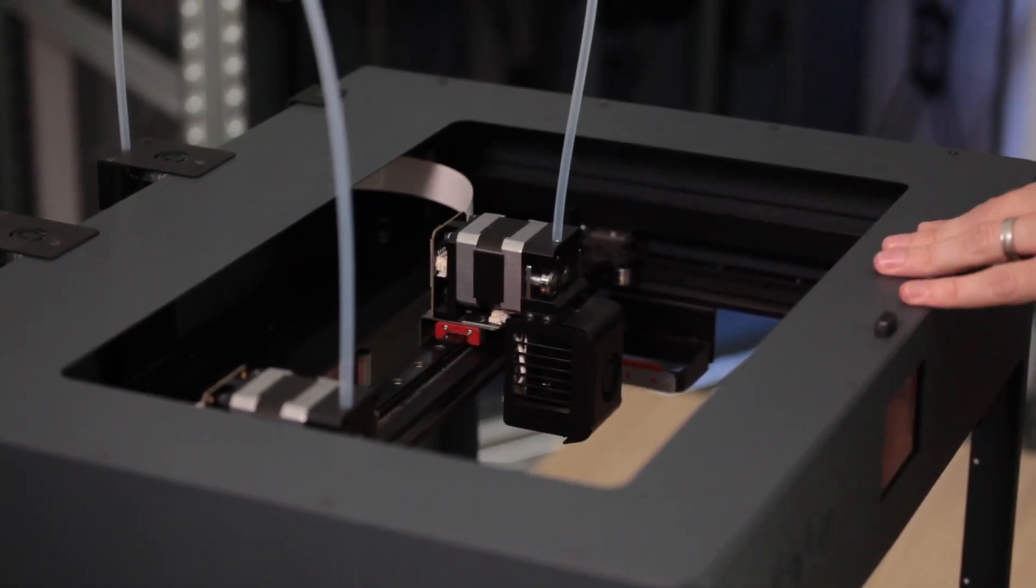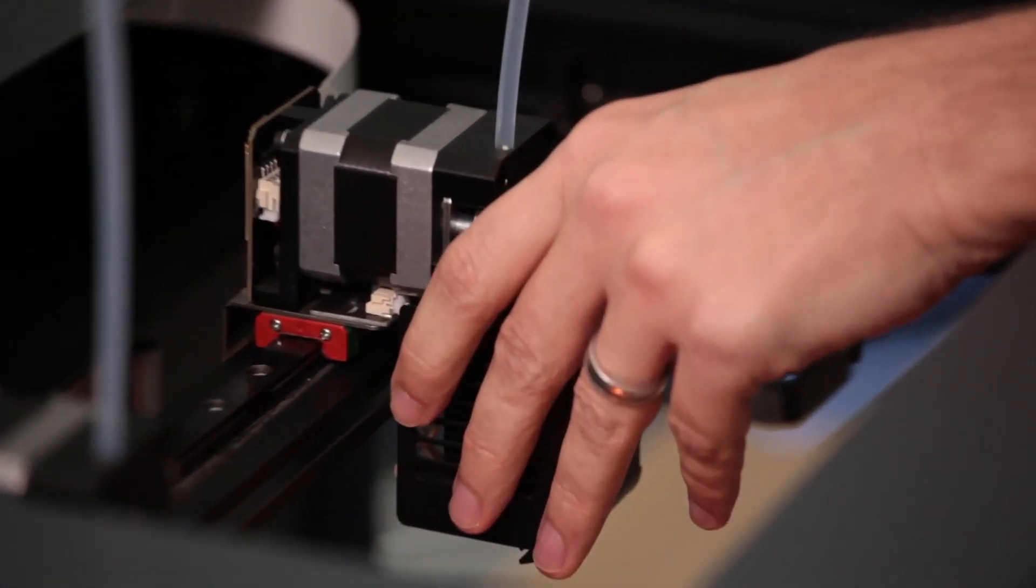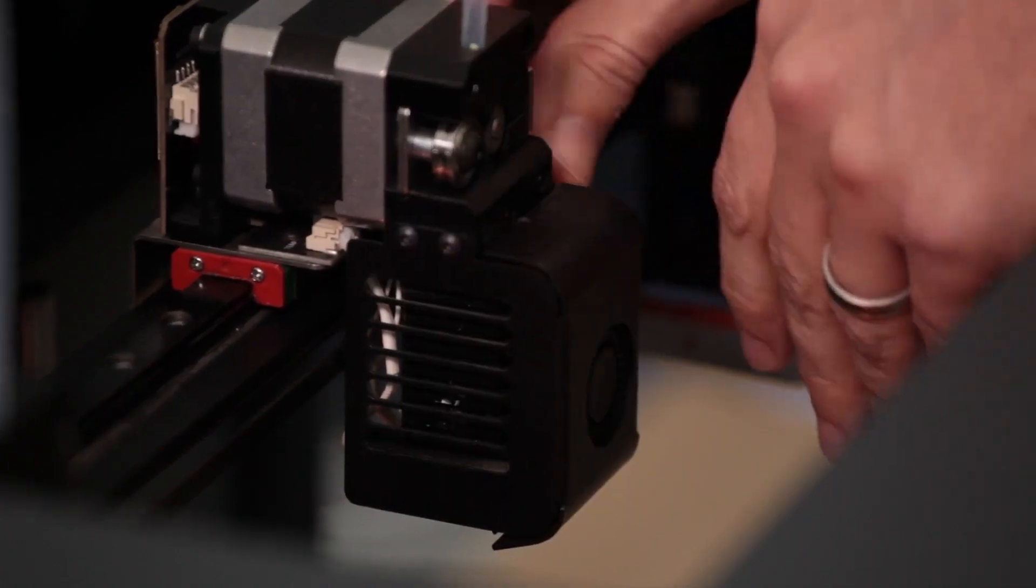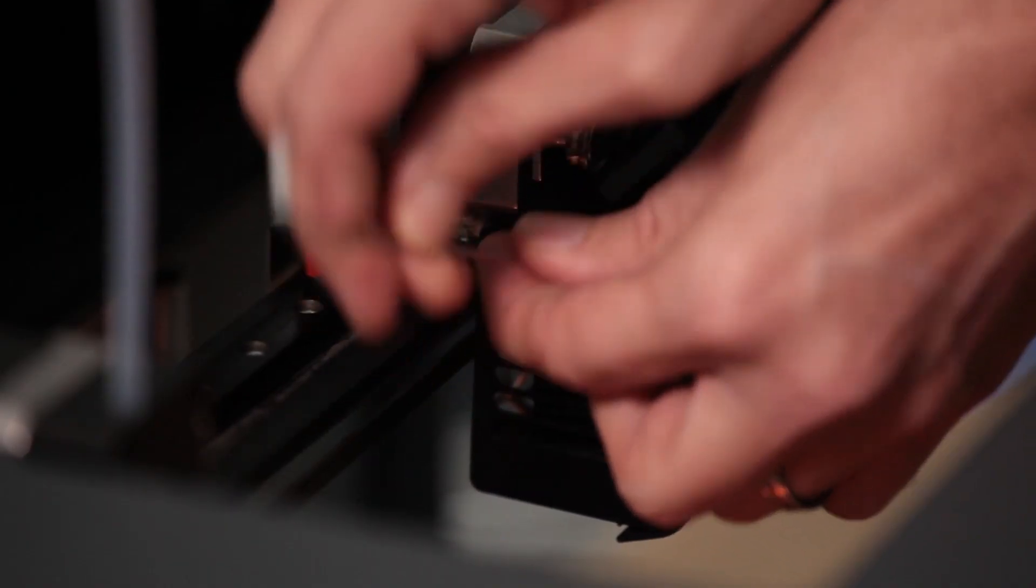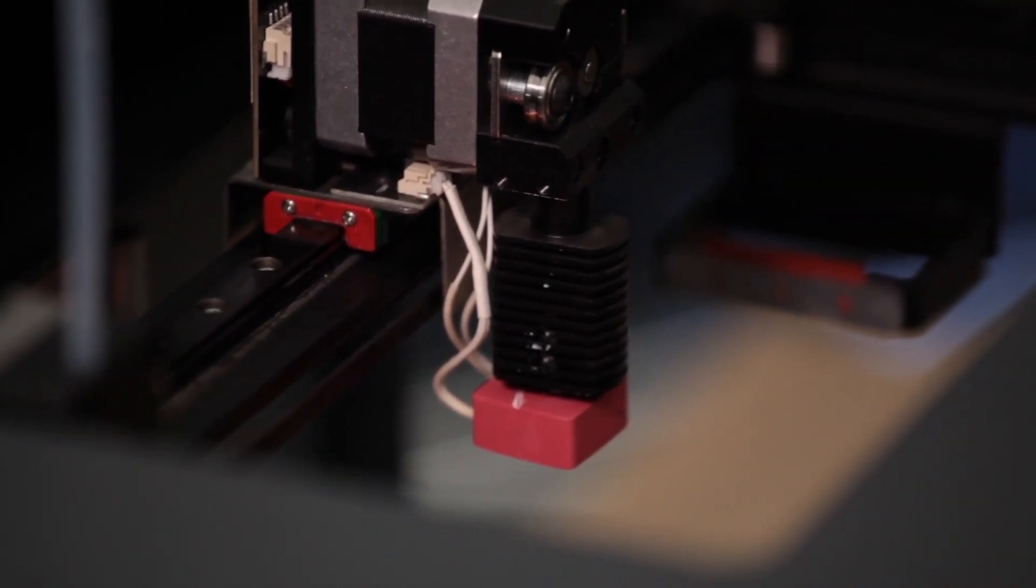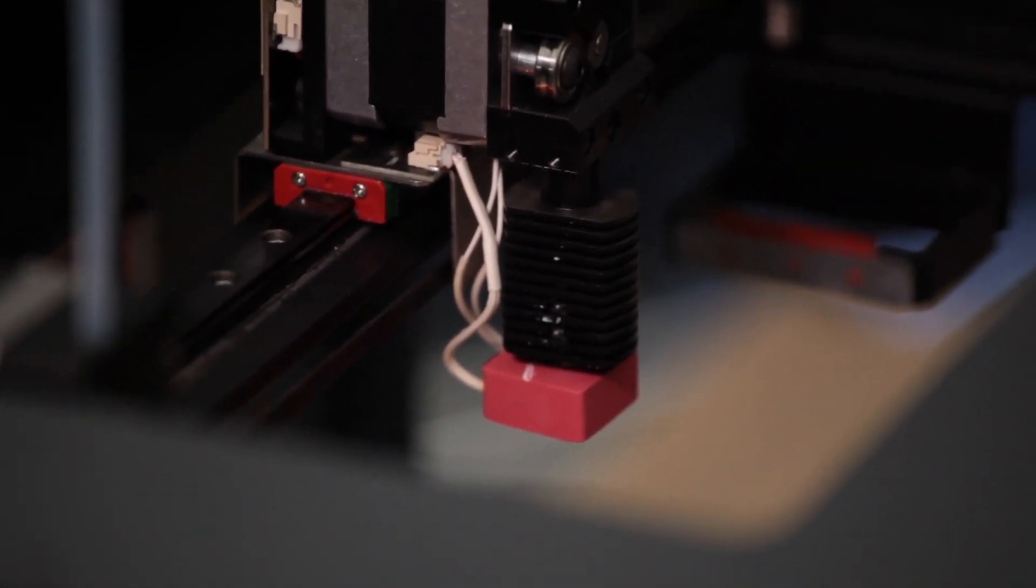Now we're going to start by removing the fan cover so that we can actually get to the hot end. There's four screws, two on each side, and once those are removed we will very gently pull the fan cover off forward so that we don't bend any of the electronics inside.